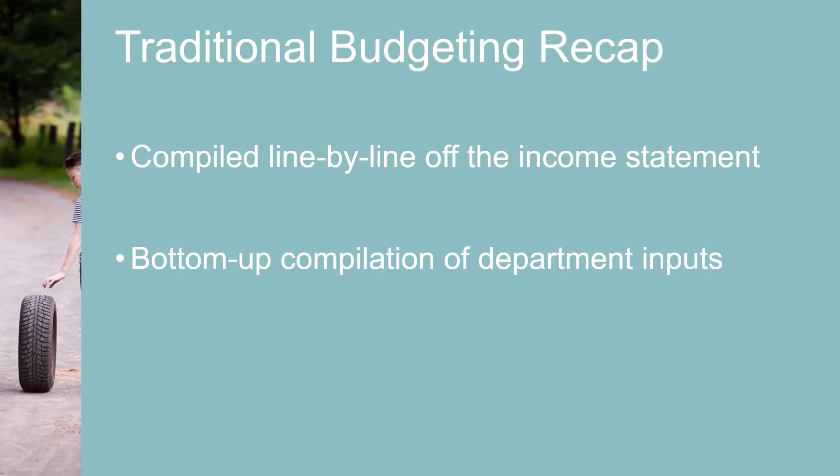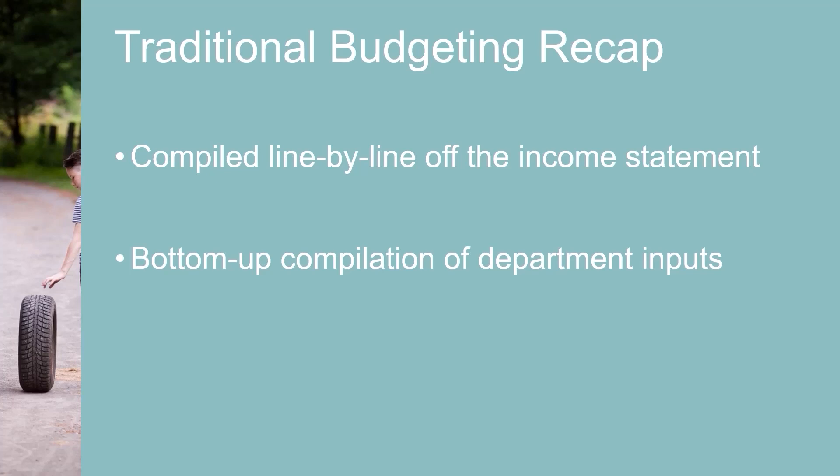each center budgets line items for their center, and then sends their budget up multiple layers of review. The company budget is the sum of all the center budgets. Revenues are often too low and costs are too high in that first draft, and so the negotiations begin. Budgets are sent back out for revisions, sometimes multiple times.